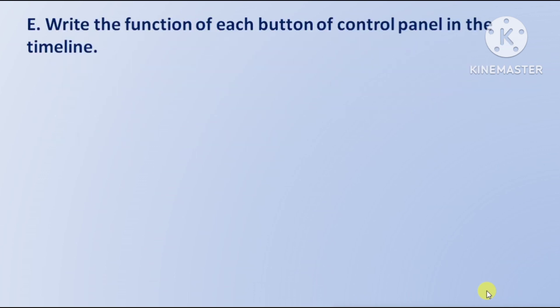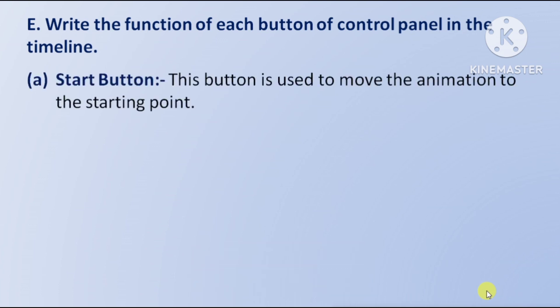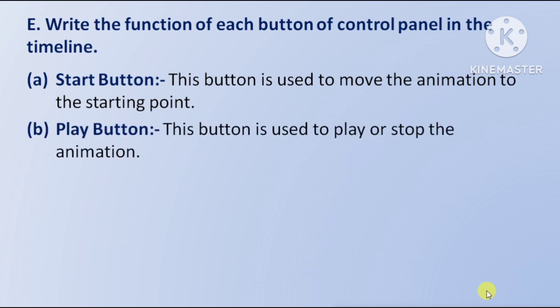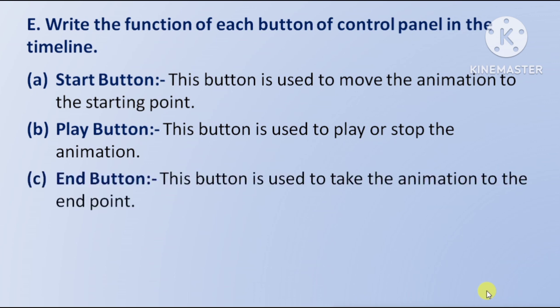Write the function of each button of the control panel in the timeline. Start button: This button is used to move the animation to the starting point. Play button: This button is used to play or stop the animation. End button: This button is used to take the animation to the end point.